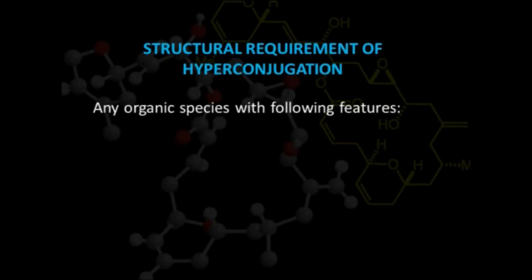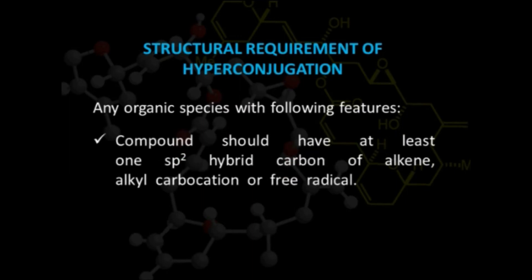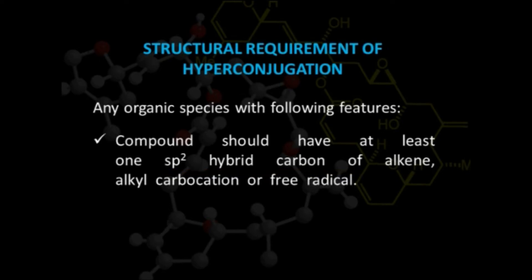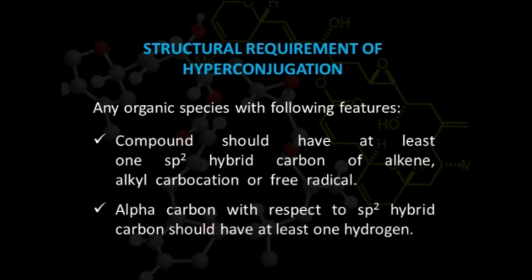What are the structural requirements for any molecule to show hyperconjugation? Any organic species must have at least one sp2 hybrid carbon, which may be present in the form of an alkene, an alkyl carbocation, or a free radical. Apart from the presence of sp2 hybrid carbon, there should be one alpha carbon having at least one hydrogen atom so that it will enter into resonance with this sp2 hybrid carbon atom.